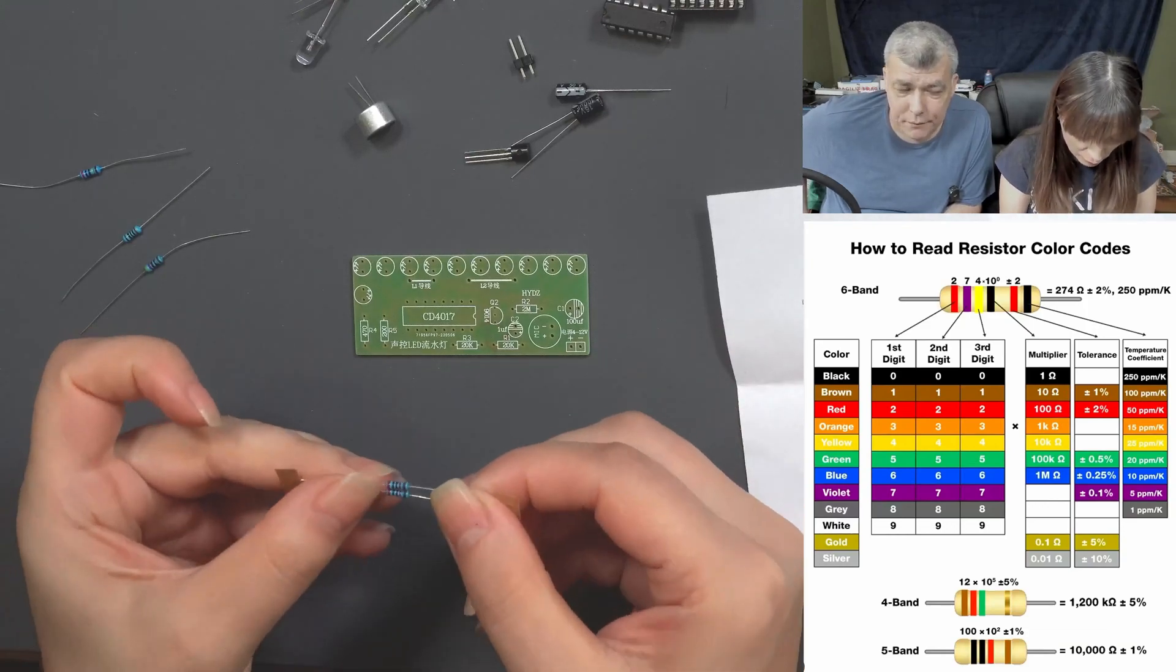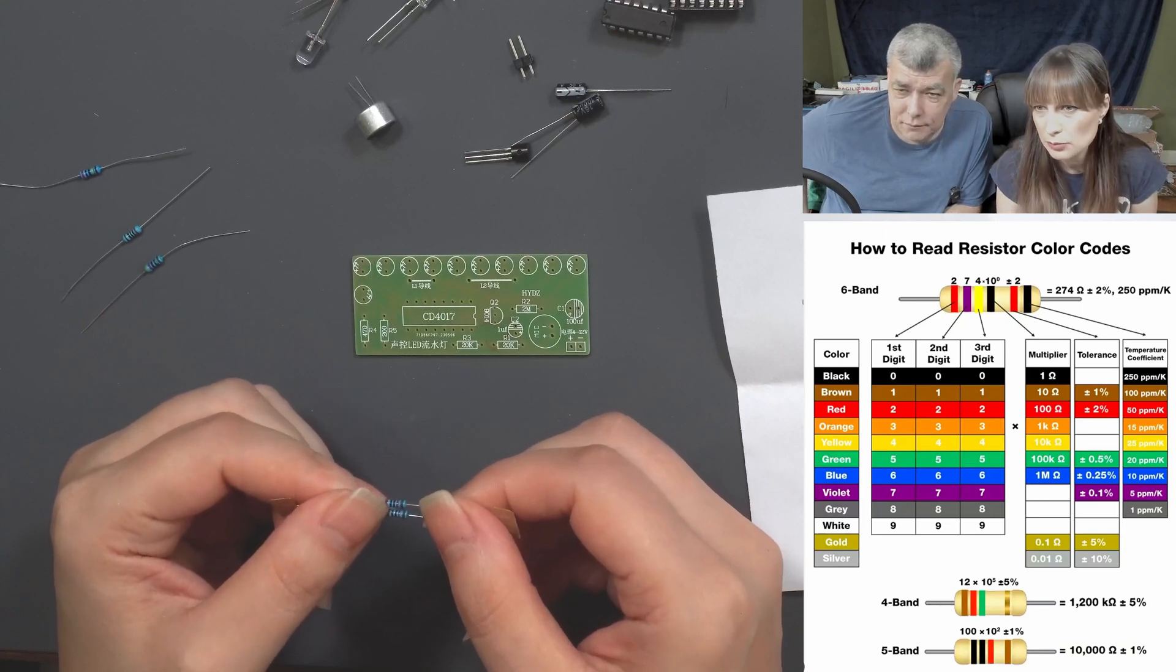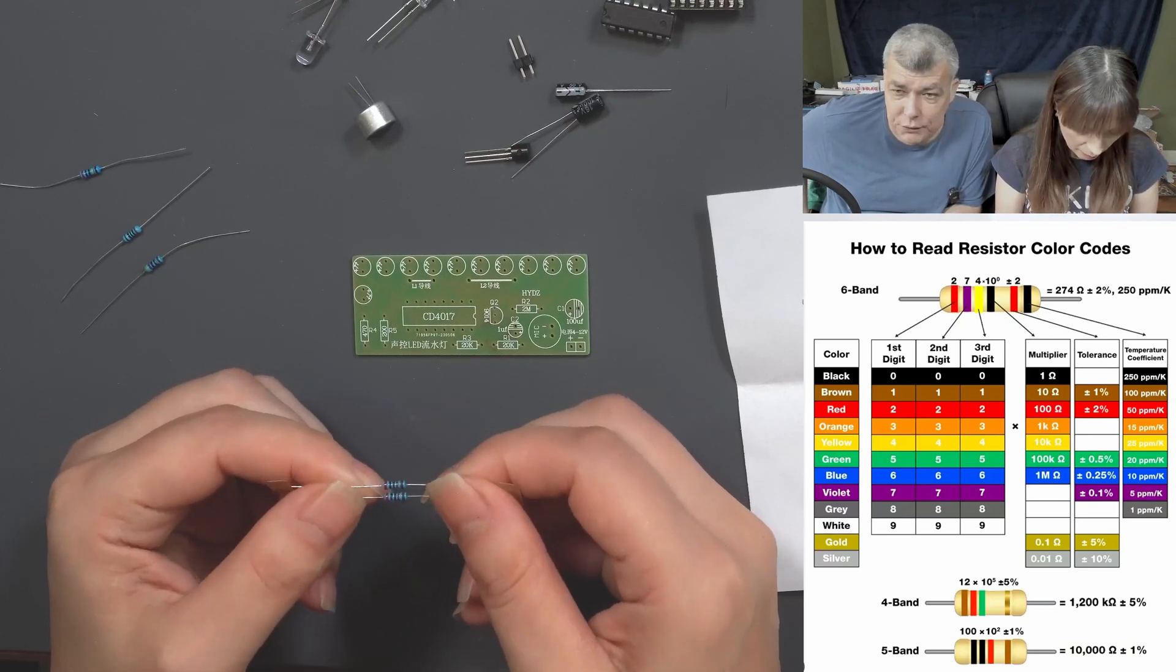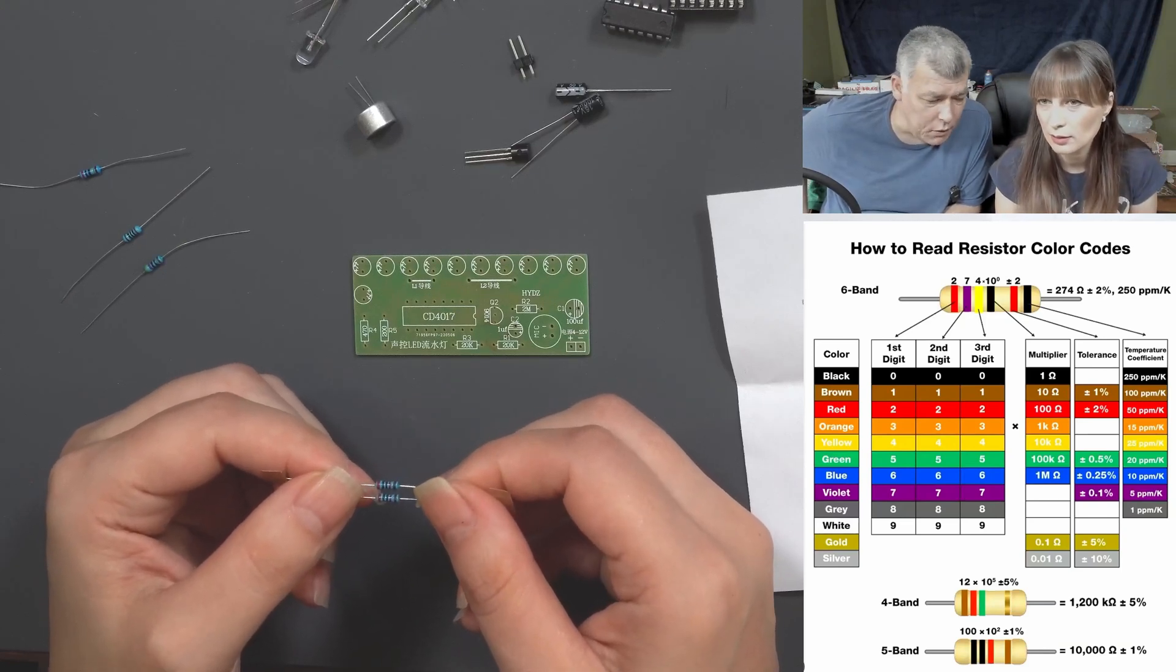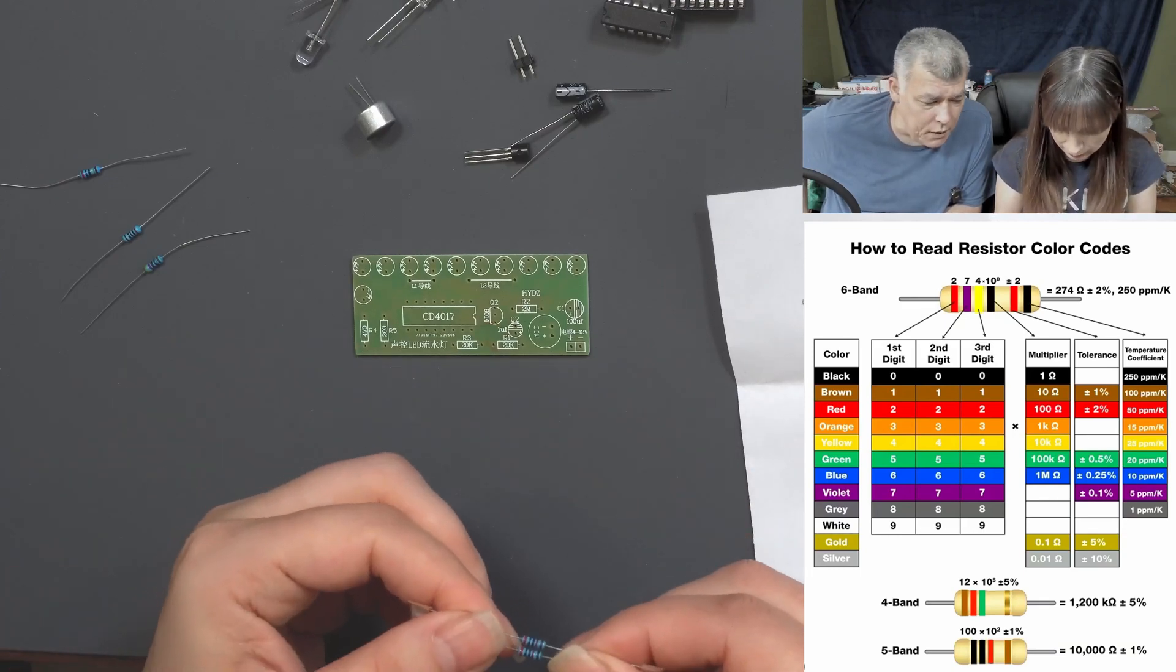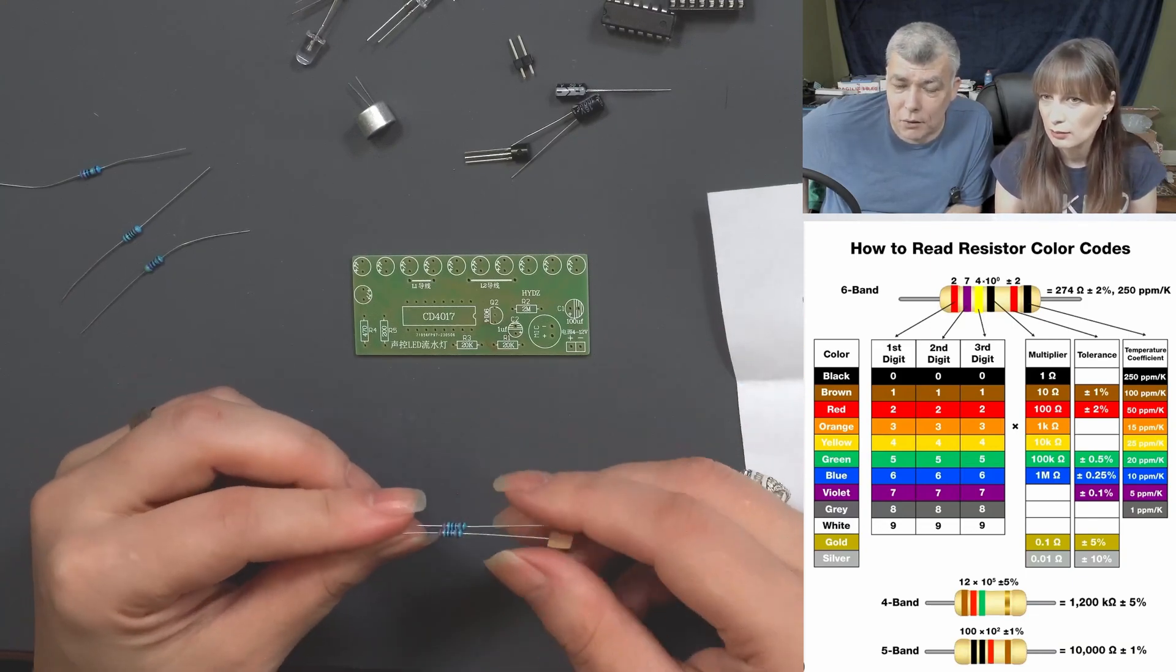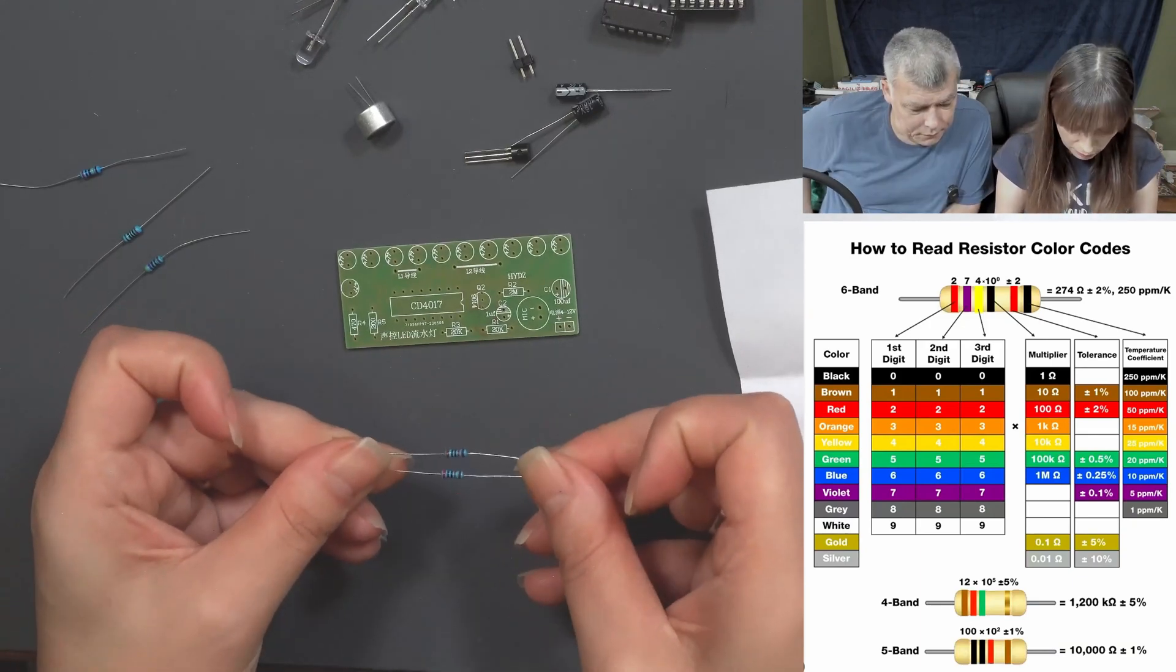So 20k should be - wait, where is 20k? There's about colors, so what is the first ring color? Red. Okay, check the red number there. Red is two. Okay, the next one is again, I can see from here it's black. So what is black? Zero. So the second ring is zero.